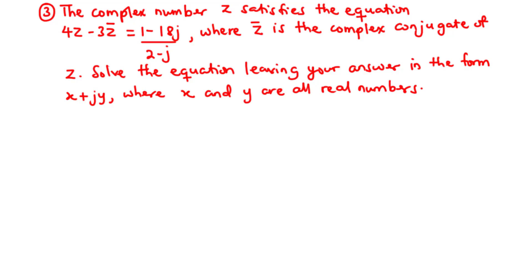In this video, we are going to continue solving questions on complex numbers. The complex number z satisfies the equation 4z minus 3z bar equals 1 minus 18j divided by 2 minus j, where z bar is the complex conjugate of z. Solve the equation leaving your answer in the form x plus jy, where x and y are all real numbers.